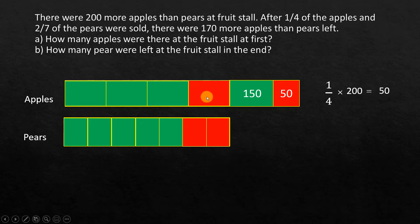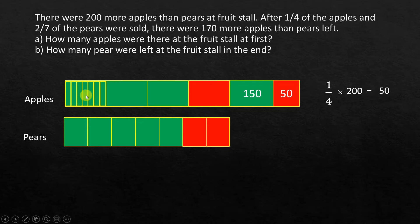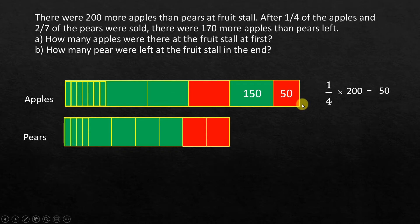Here we have four units for apples including the one that was sold, and seven units for pears including the two that were sold. The LCM of seven and four is 28. So for the apples, each of the four units is divided into seven smaller units, giving 28. For the pears, each of the seven units is divided into four smaller units, also giving 28. Now the unit sizes are the same on both sides.